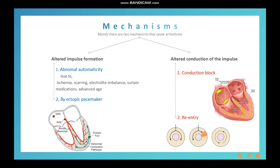Abnormal automaticity can be due to ischemia, scarring, electrolyte imbalance, certain medications, and advancing age — such as people over 70s and 80s. This causes abnormal automaticity and results in arrhythmia. The second cause under altered impulse formation is an ectopic pacemaker. Ectopic means something in an abnormal place or position. An ectopic pacemaker is an excitable group of cells outside the normal SA node that causes premature heartbeat.